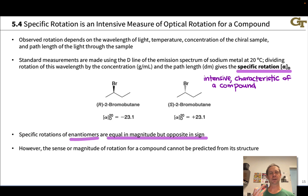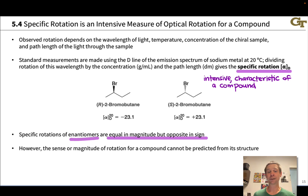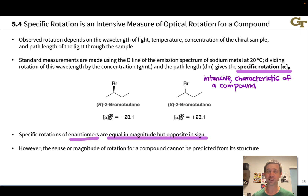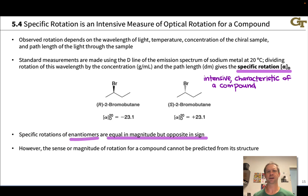We should note that in general we cannot predict the sense of rotation — whether positive (clockwise) or negative (counterclockwise) — or the magnitude of rotation from molecular structure, because optical activity is very much an emergent property. It depends on intermolecular forces that might exist in the sample and can depend on the solvent used. Certain functional groups don't cause particular values of optical rotation, unlike spectroscopy.